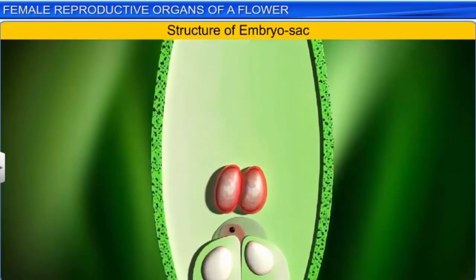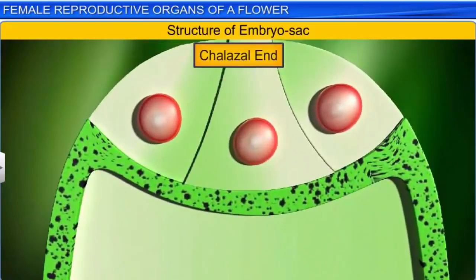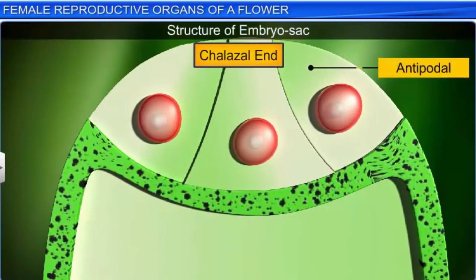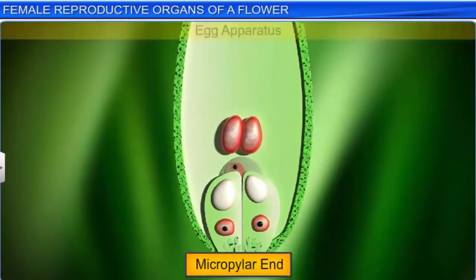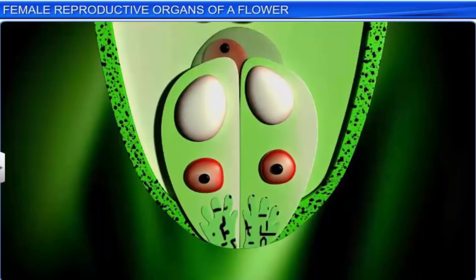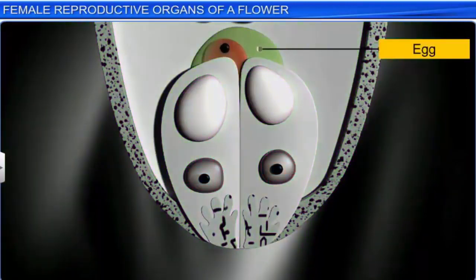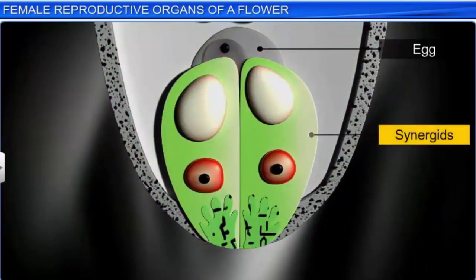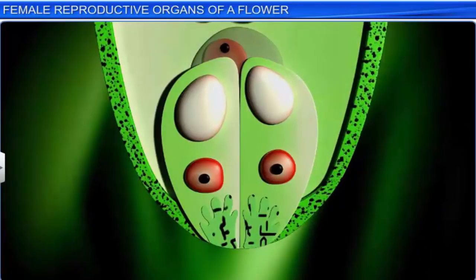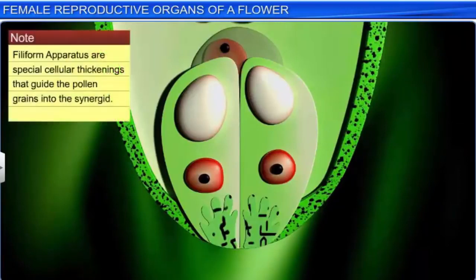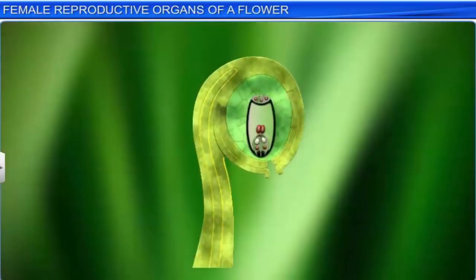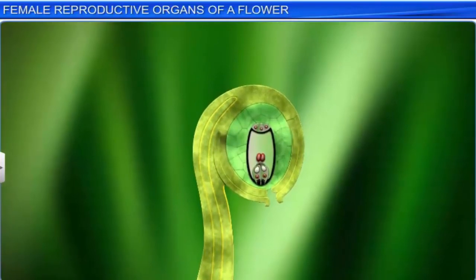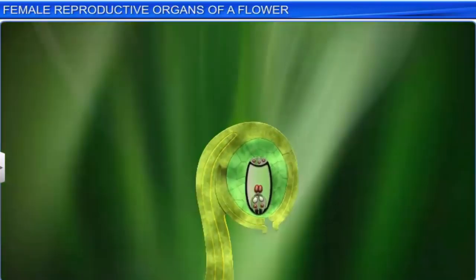The three cells present at the chalazal end group together to form the antipodal cells, which do not have any specific function. Whereas the three cells at the micropylar end group together to form the egg apparatus. While one of the cells functions as an egg or the female gamete, the other two cells are called synergids. If you observe the micropylar tip of the synergids, you will notice special cellular thickenings called a filiform apparatus that guides the pollen grains into the synergid. The synergids, as well as other cells, form the embryo sac — the female gametophyte — born inside the pistil.